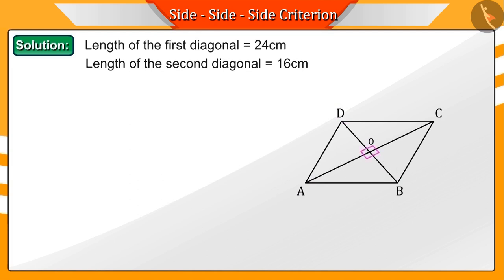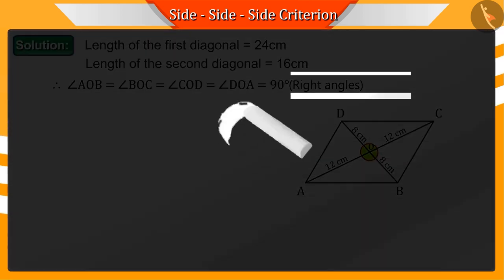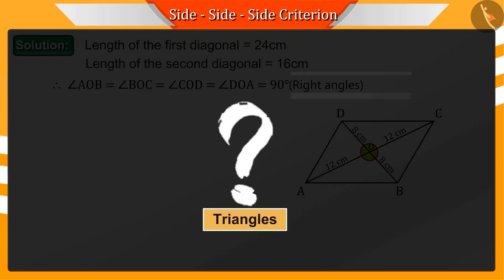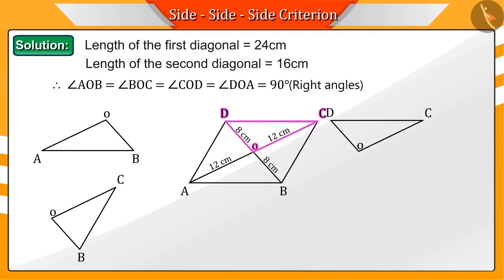We know that the diagonals of a rhombus divide each other into equal parts perpendicularly. That is why angles AOB, BOC, COD and DOA are right angles, that is, they will be 90 degrees. In this rhombus, which all triangles can you see? Correct. Here we can see four triangles: triangles AOB, BOC, COD and triangle DOA.